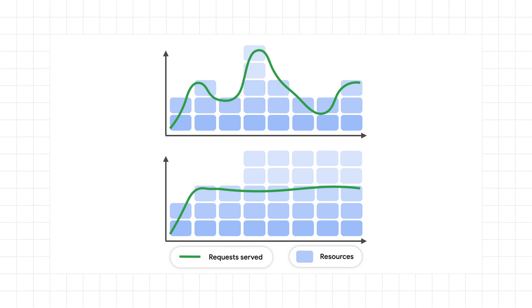But if your app can't scale, you might need to consider refactoring to a structure that works well with Kubernetes. For example, single-threaded apps or apps that can only run a limited number of concurrent processes may not get much value out of the extra resources.